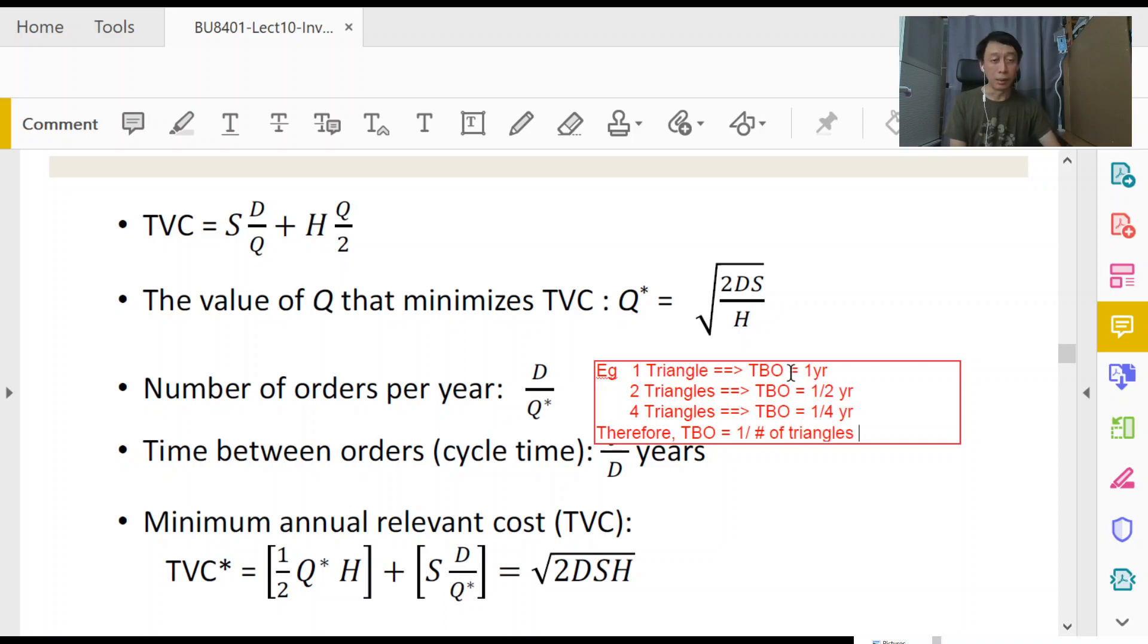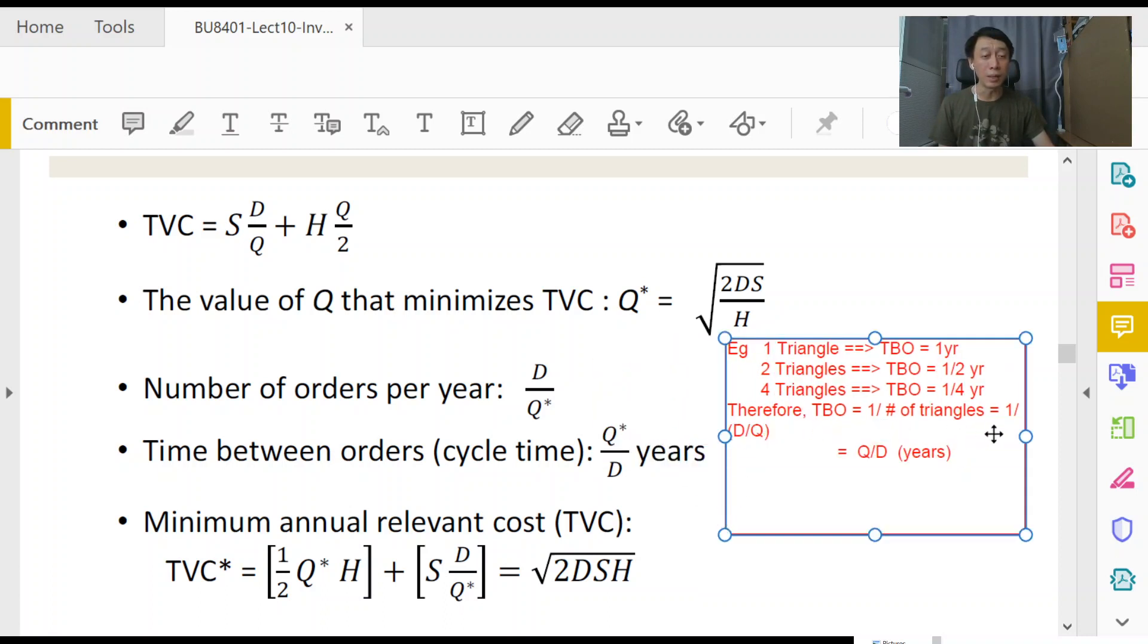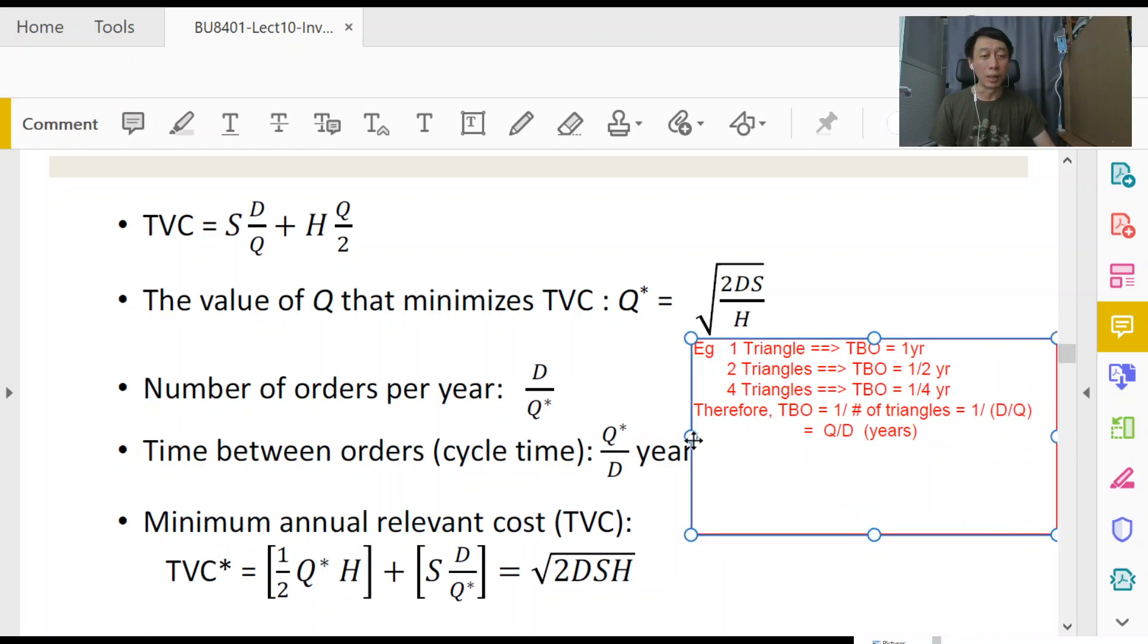We have that as a formula, and that's one divided by d over q, so the formula is going to be q over d. Pay attention because the unit is always years. If you get a small tiny fraction, multiply that by the number of days per year. Then you will get number of days.